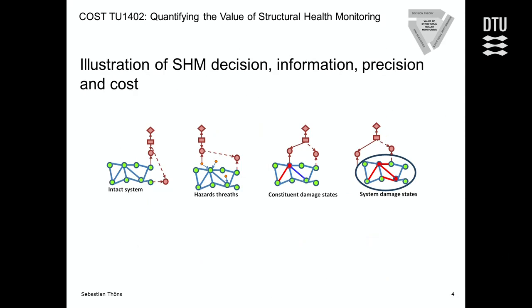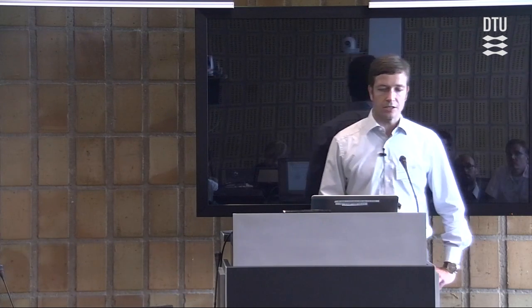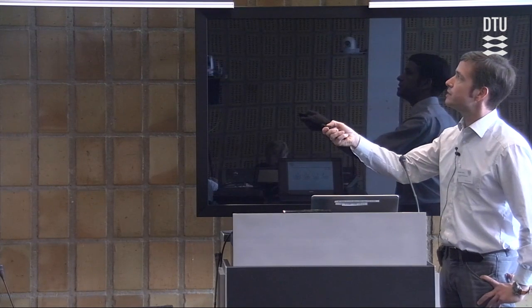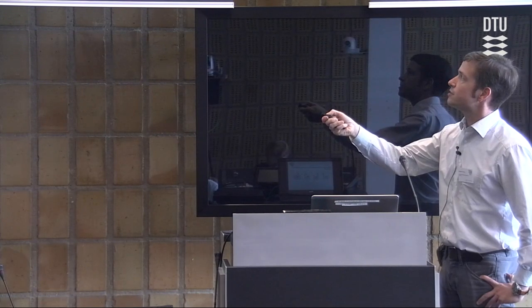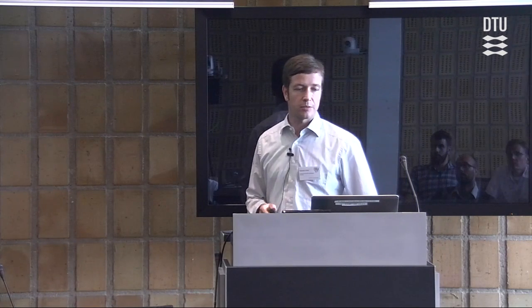When we take a closer look at the value of information and structural health monitoring, we see that we have various strategies for monitoring the intact system. Hazard threats constitute damage states and system damage states. This is symbolized with a mini Bayesian network with an observation node, a decision node, and a cost node — symbolizing the SHM decision, information, precision, and cost.